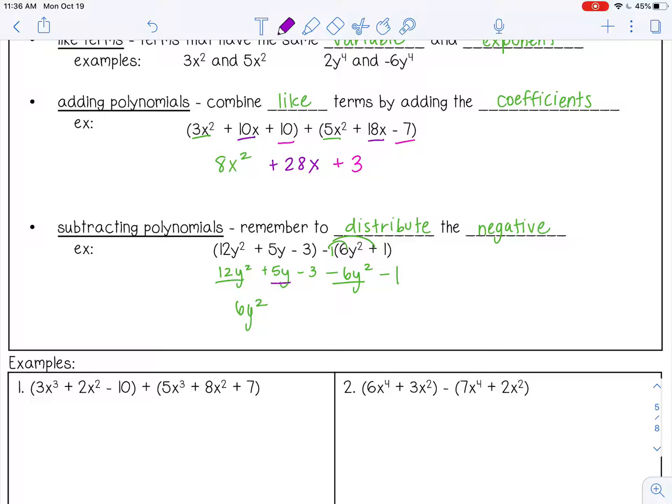Then I have 5y. There are no other terms that are similar to 5y. There's no other y to the first power, so I'm just going to bring it down. Plus 5y. And then I have my constants, negative 3 minus 1, which gives me negative 4.